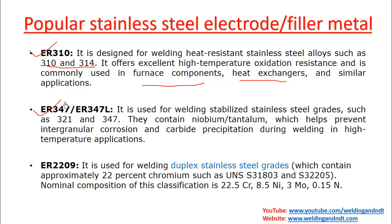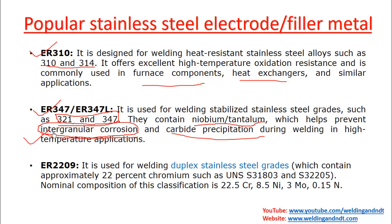ER347 and ER347L are used to weld 321 and 347 grades of stainless steel. They contain niobium and tantalum, which help prevent intergranular corrosion and carbide precipitation during welding in high-temperature applications. If you want to learn the mechanism of intergranular corrosion — how it happens and what remedies to take — I've explained it with figures and diagrams in my CSWIP Chapter 17 video lecture series.